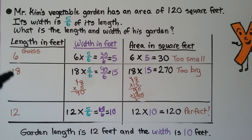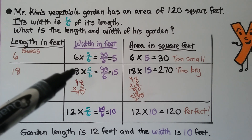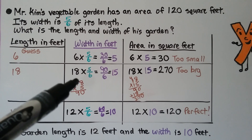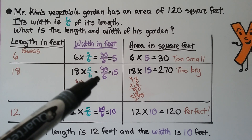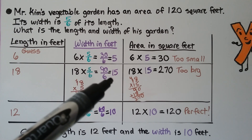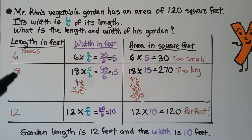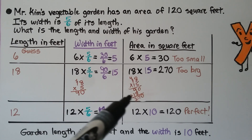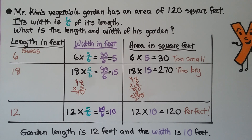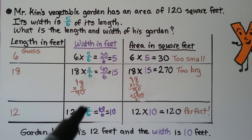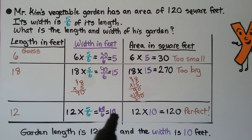Let's guess big and try 18. We multiply 18 times five-sixths to find the width: 18 times five is 90, and 90 divided by six is 15 feet. The area is 18 times 15, which is 270 square feet — way too big. Let's try 12. Twelve times five-sixths: 12 times five is 60, and 60 divided by six is 10. The area is 12 times 10, which equals 120. That fits perfectly. The garden length is 12 feet and the width is 10 feet.